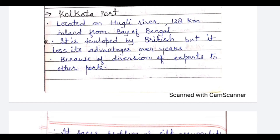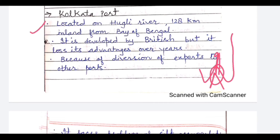Now moving to the East Coast, the six major ports there will be covered starting from the top. The first East Coast port is Kolkata port in West Bengal, located on the Hooghly river, 128 km inland from the Bay of Bengal. Ships have to travel 128 km upstream on the river to reach it. It was developed by the British, but it is gradually losing its advantage because exports are being diverted to other ports.